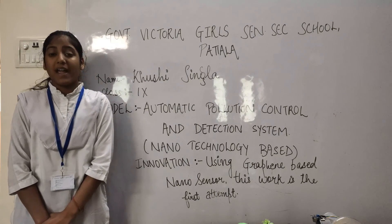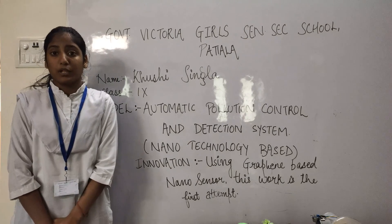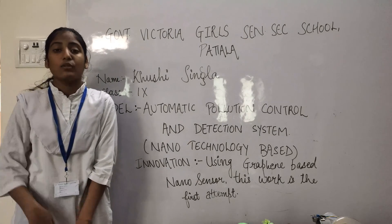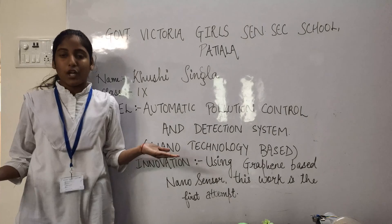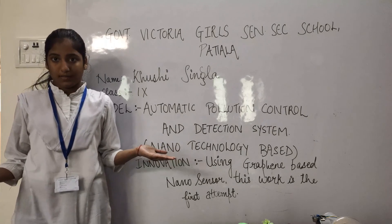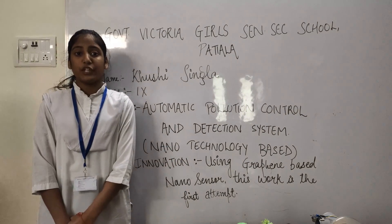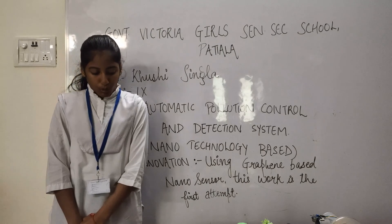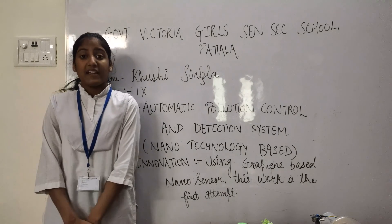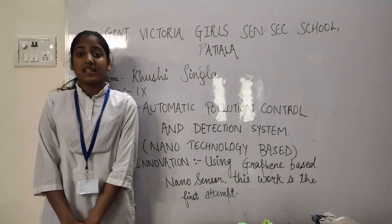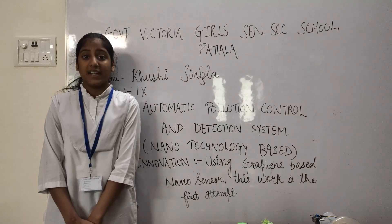Ground level ozone includes methane and nitrogen dioxide, which is another higher risk. The cost of this type of air pollution is immense to both human health as well as economic life. Every year, 7 million people are dying.